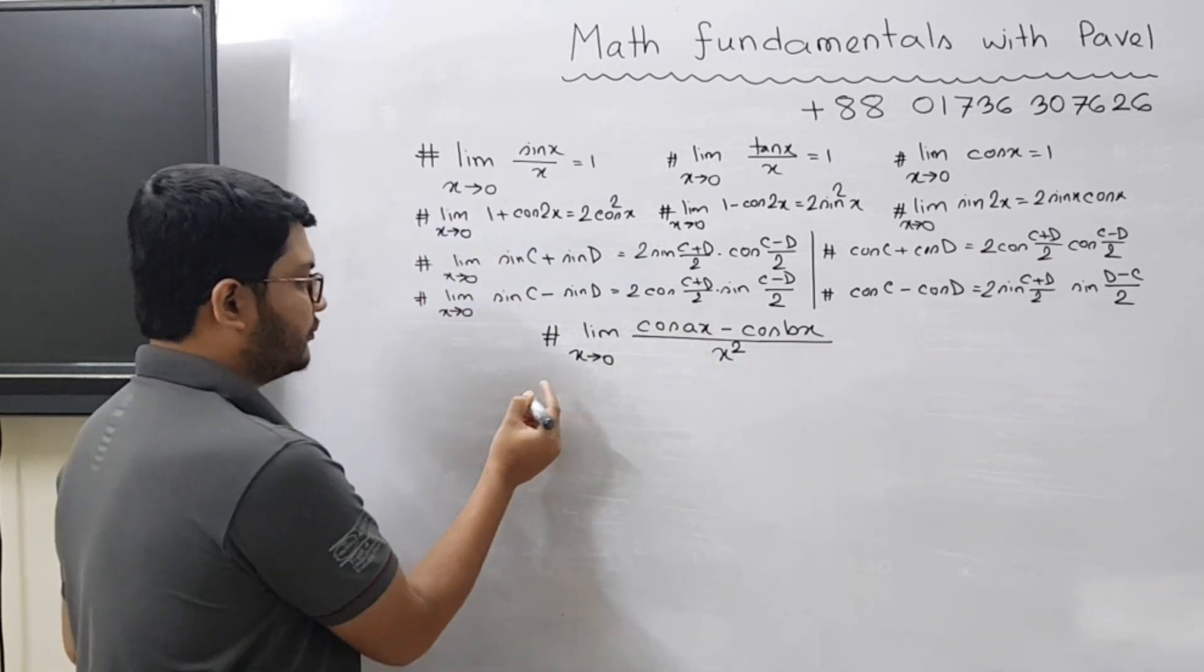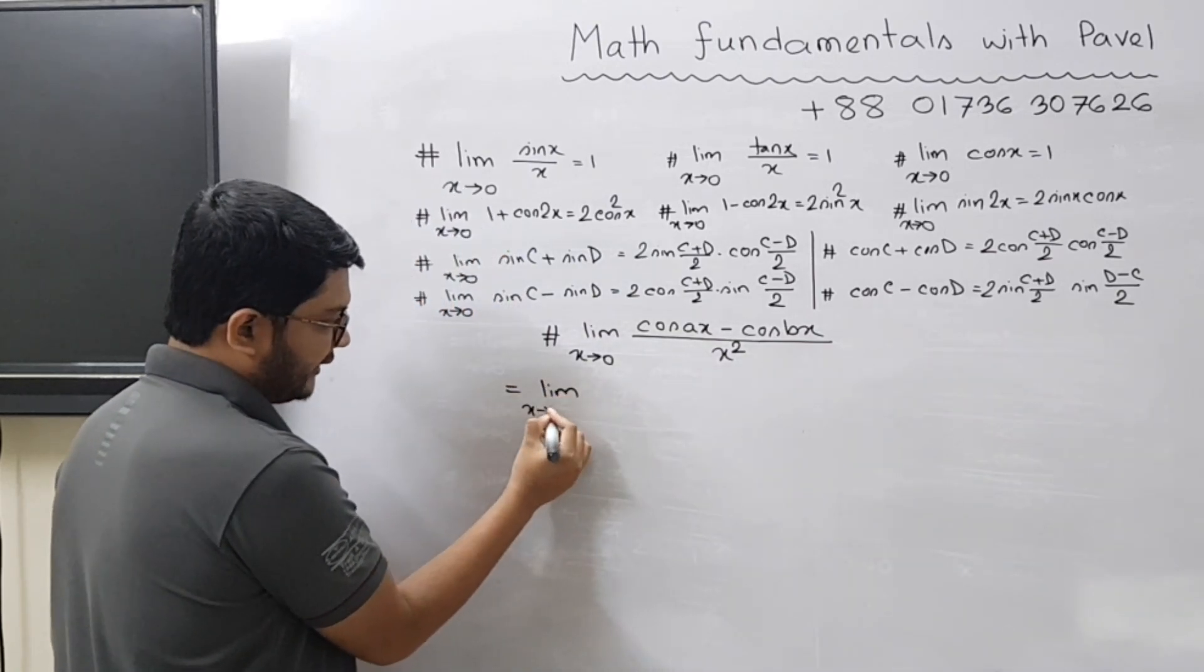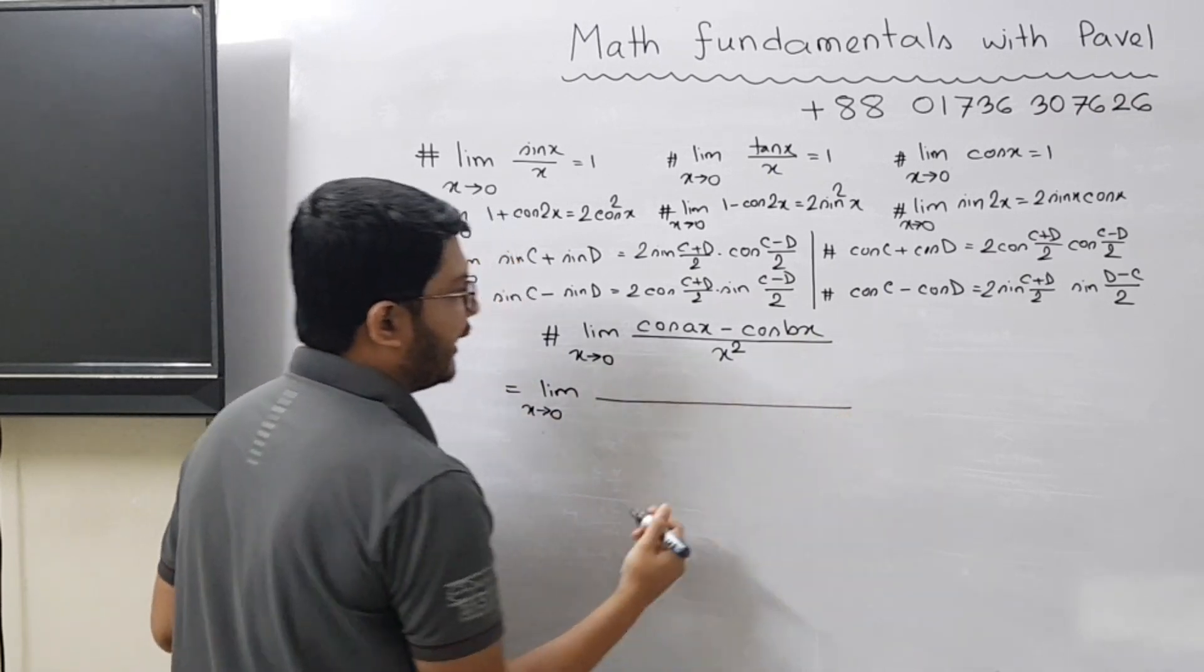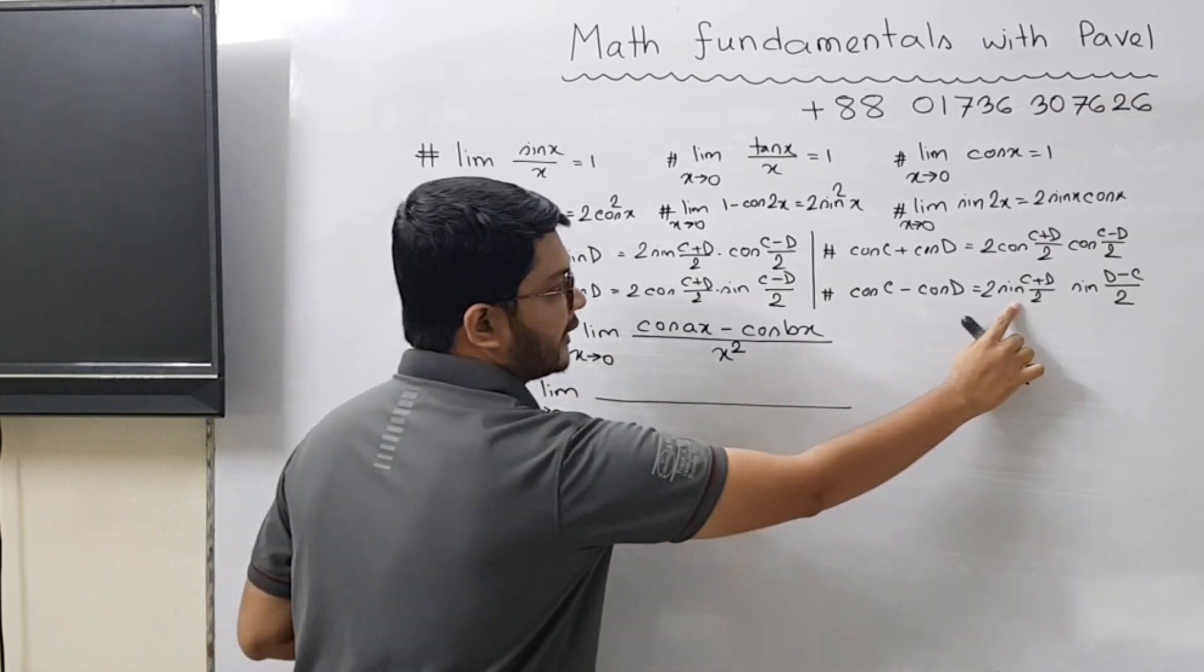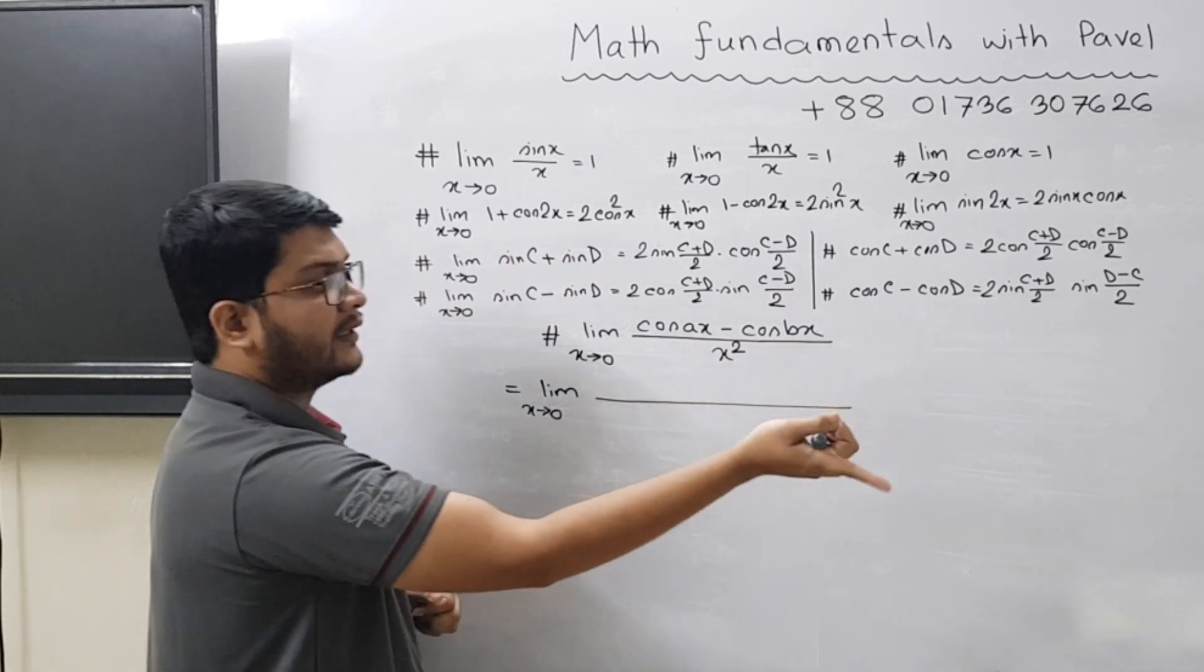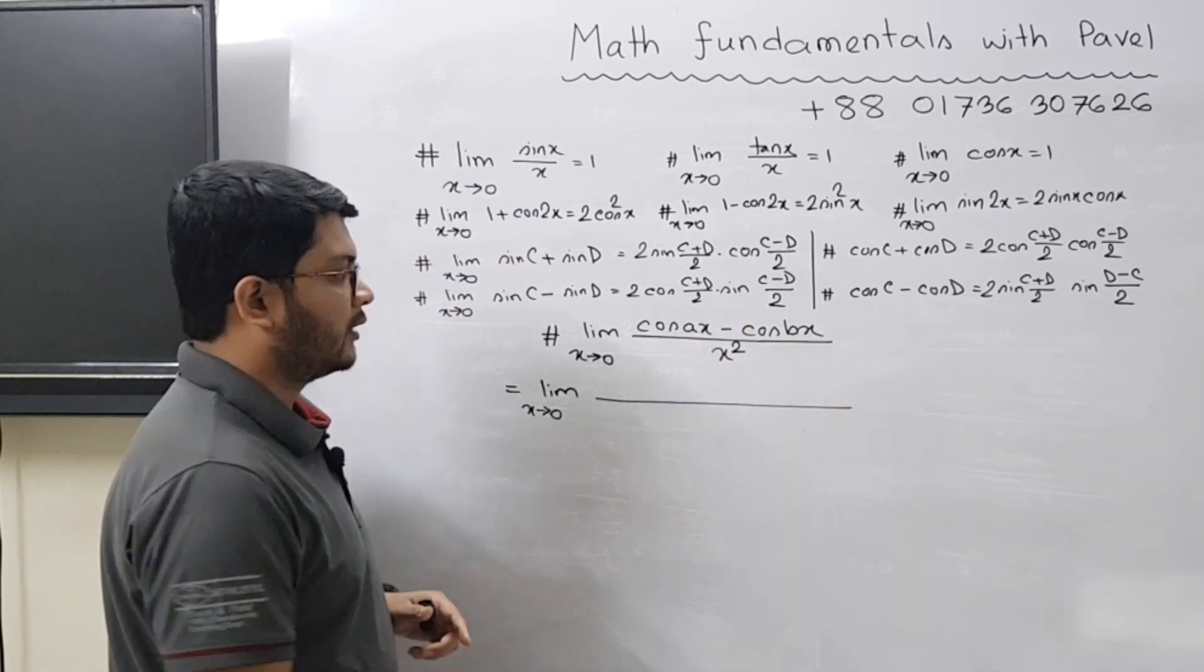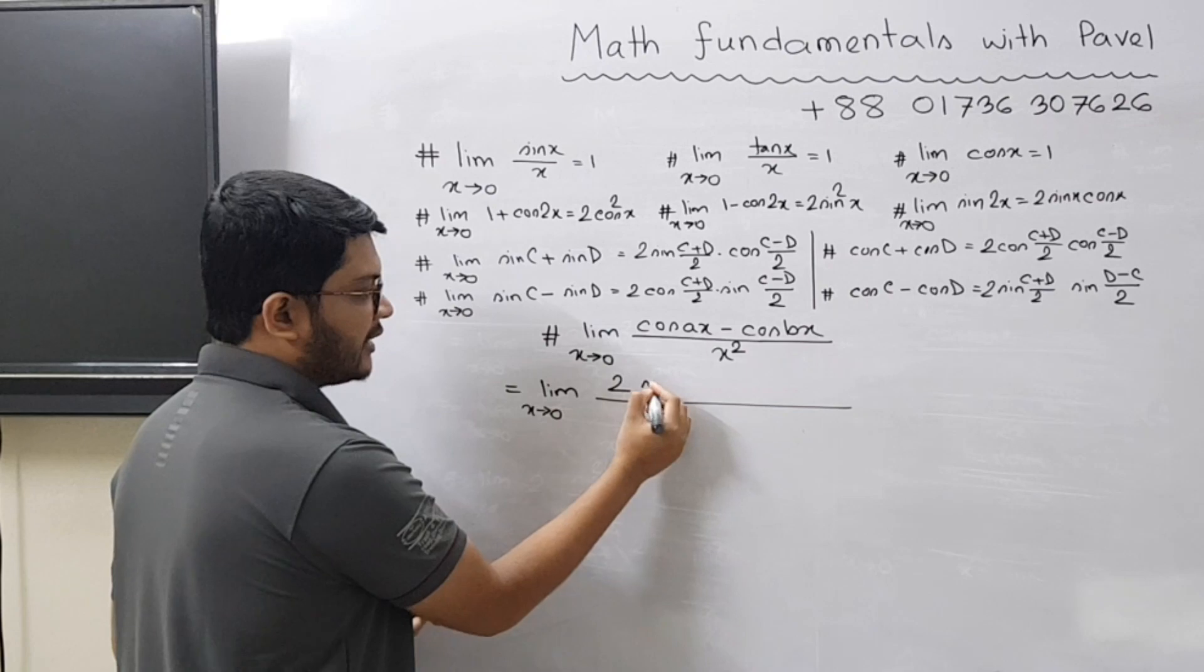We can write limit x tends to zero, and it would become two sine c plus d by two into sine d minus c by two. You have a two here, and then sine c plus d by two.